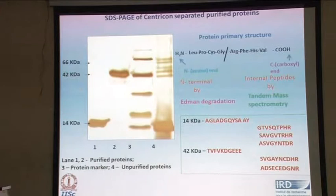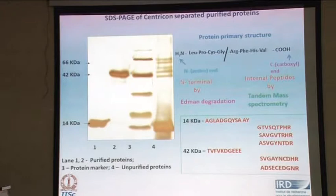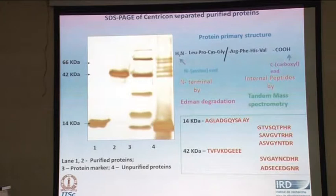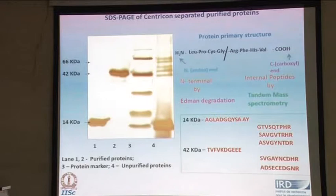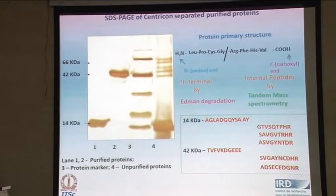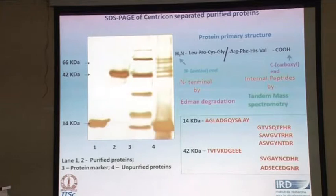Once you purify, you enrich the fractions of interest, and you can develop a bioreagent by this process. For protein structure identification, you do N-terminal sequencing by the Edman degradation process, and the other end is the carboxyl end — protein molecules are amphipathic, having both amino and carboxyl groups. You can find the internal peptides by tandem mass spectrometry. Based on these results, you reconstruct the protein profile from amino acids like alanine, glycine, and leucine. We have deposited the sequence in the protein profile repository.